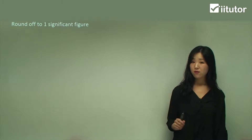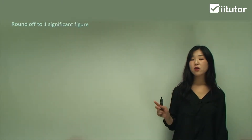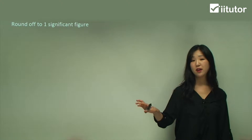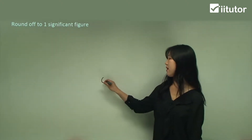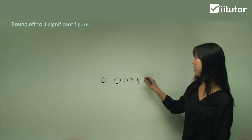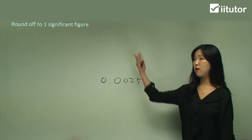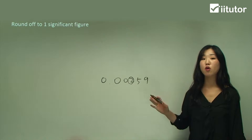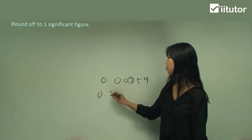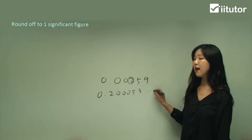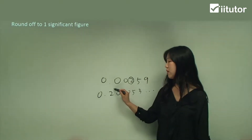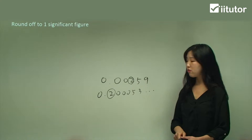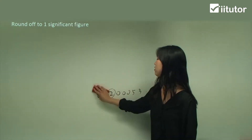With significant figures we only start from the first non-zero number. So if the first numbers are all zero at the very beginning, we exclude those. For example, if we have 0.00259 and round to one significant figure, we start from two because the first numbers are all zero. But if it's 0.200053, you start from two as well — these zeros in between you do include. Only the leading zeros you don't include. That's the little trick for significant figures.